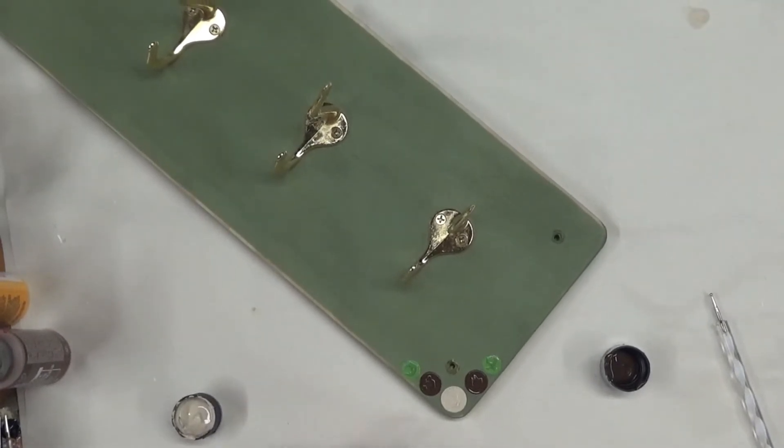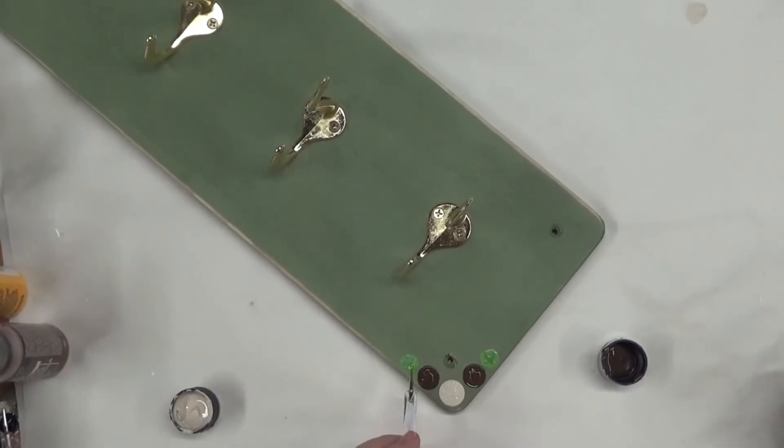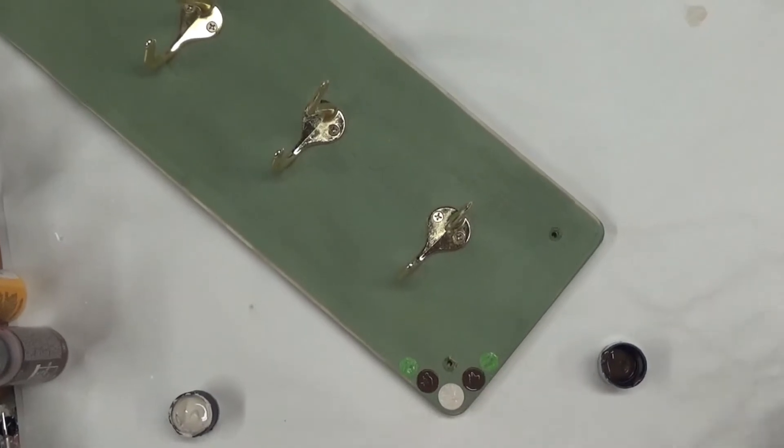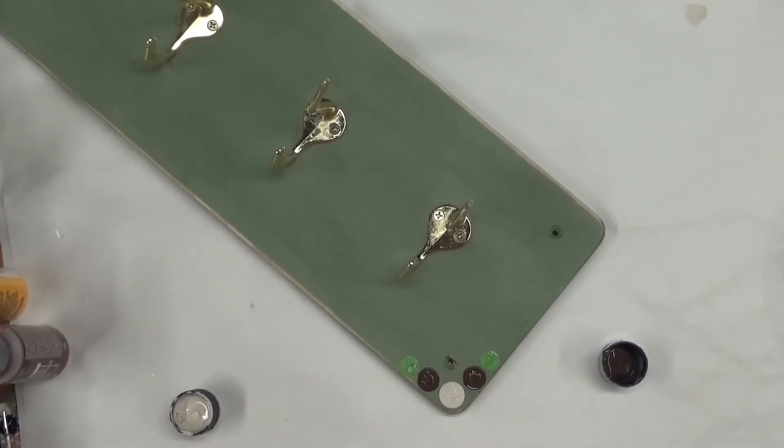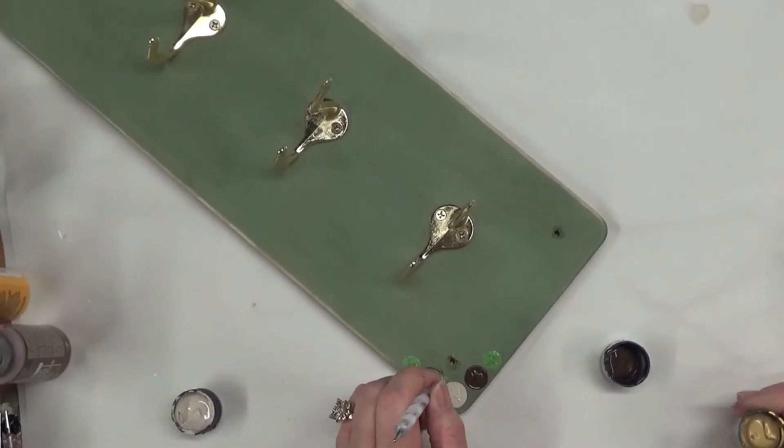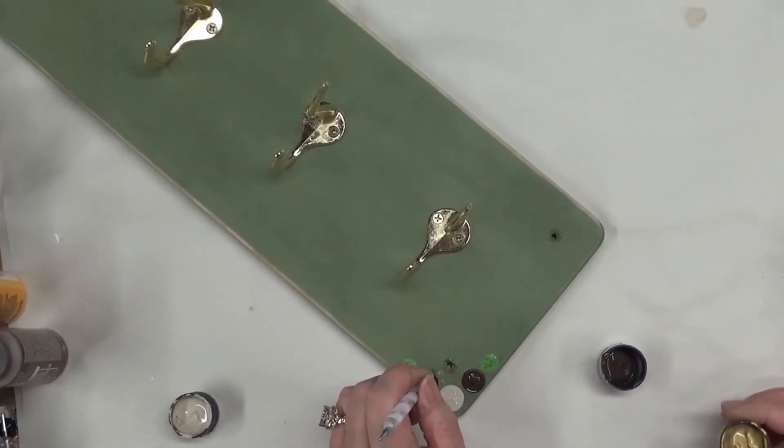I'm going to dot next to it and then do the same on the other side of the teal brown. What I'm going to do to try to double these out a little bit is just take one of my smaller dotting tools and then go back in and just try to smooth them out a little bit if they're bumpy, so they dry a little bit flatter.